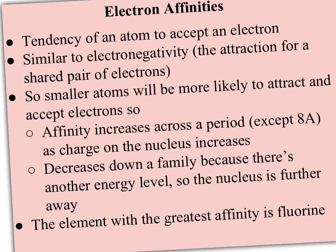Just like electronegativity, electron affinity is going to be greater for smaller atoms. Smaller atoms are more likely to attract and accept electrons. Affinity will increase as you go across the period because the charge on the nucleus increases. The exception is that noble gases don't have a strong affinity to accept an electron because they don't need it. Affinity increases across a period as the nucleus gets stronger, and it decreases down a family because the electrons are getting pushed further out with another energy level being added. The element with the greatest affinity is in the upper right corner, just short of the noble gases — that would be fluorine. And the element with the least affinity is in the lower left corner, the largest atom: francium.